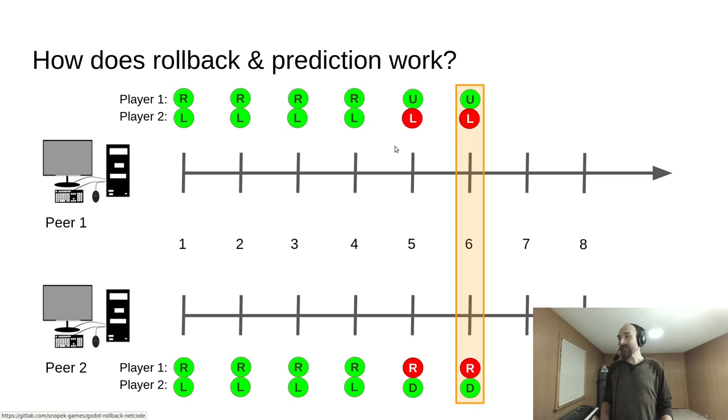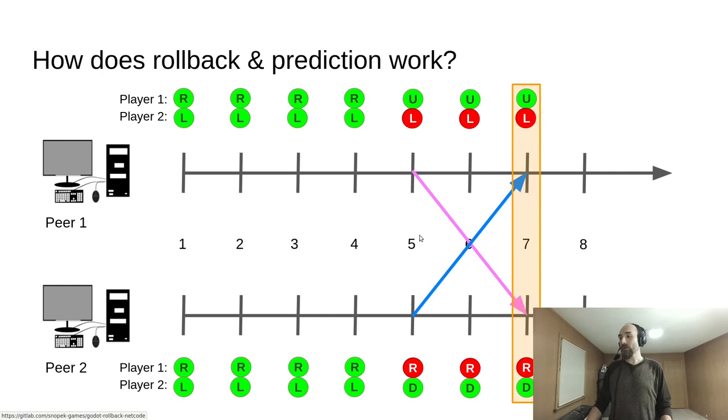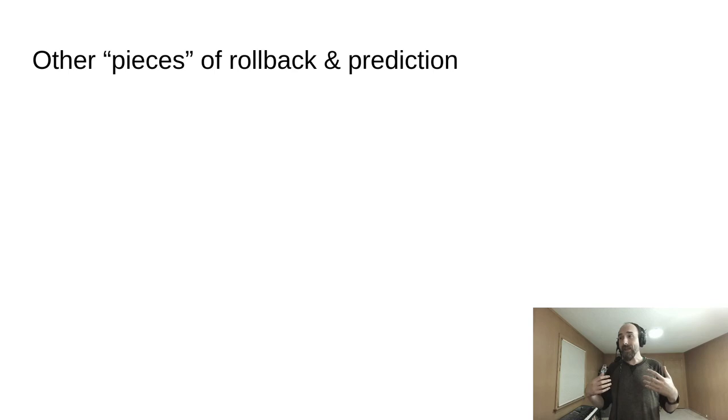We get to frame number 7, where we finally receive the input from tick number 5, which is where we had this change in input. Since we predicted wrong, this triggers a rollback. We inject the real input, re-simulate, re-predict, re-simulate, simulate frame number 7, and move on.